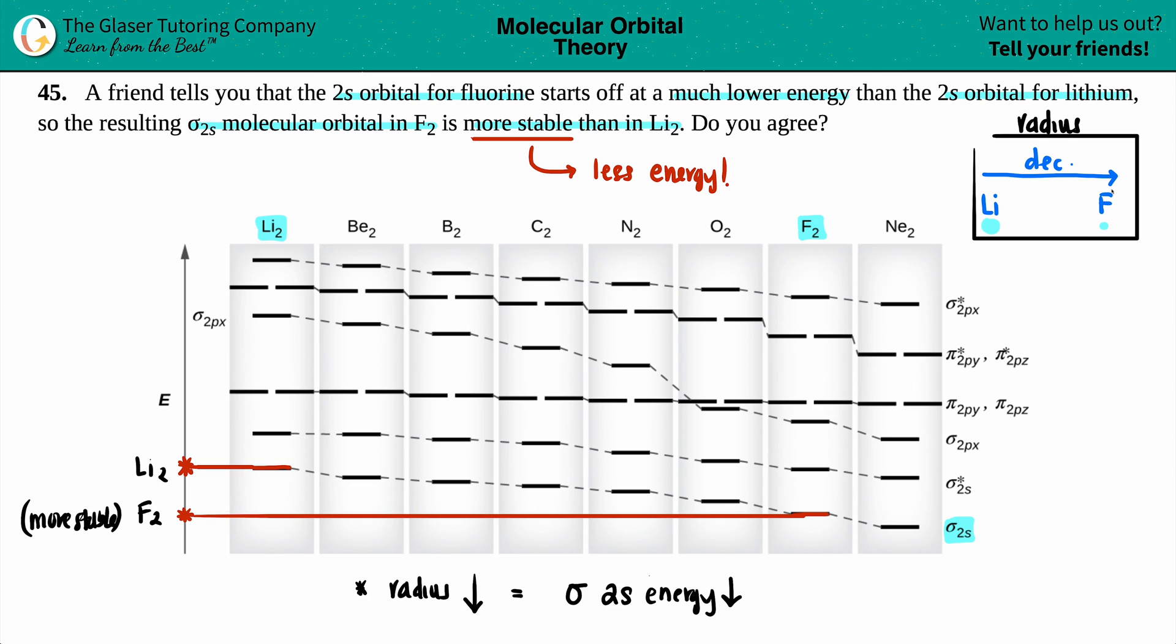So since fluorine is a smaller atom, those electrons will be more attracted to the nucleus, making it a more stable atom. So do you agree? I agree. I concur. Do you concur?